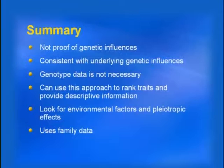To summarize familial correlations: like the other things we've talked about, this is not proof that there are genetic influences, but if the patterns are similar to what we would expect, they would indicate possible underlying genetic influences on different traits — consistent with genetic influences, but not proof of. We have not used any genotype data; this relies only on the phenotypic data you probably already have. Like the twin studies, we can use this approach to help rank traits, look to see which traits might be correlated with each other, which ones seem more environmentally influenced, and in general help refine what we're looking for. We talked about being able to look for environmental effects and suggestive evidence for pleiotropy. That concludes our session for today on twin studies and familial correlations. Thank you.